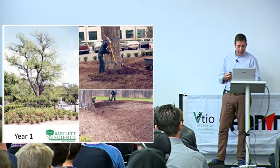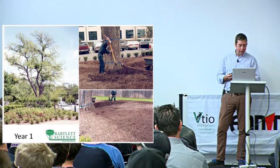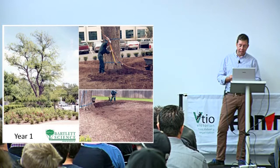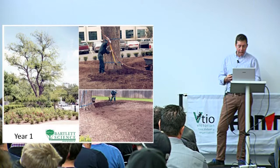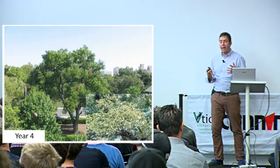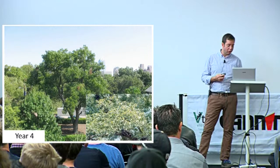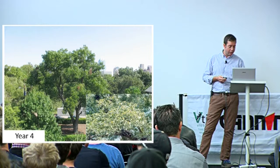As an example, a declining pecan in the States had this root decompaction work done along with nutrition and mycorrhizal inoculations. After year two it was getting a little better, year three, year four - and actually that mature tree was saved and looks really spectacular, still contributing to the landscape. You can turn trees around if the problems lie in the root system.